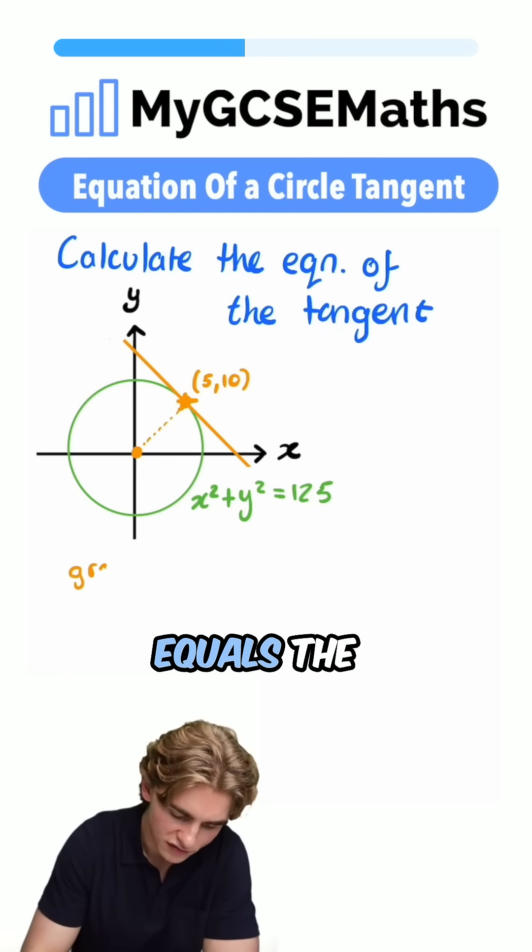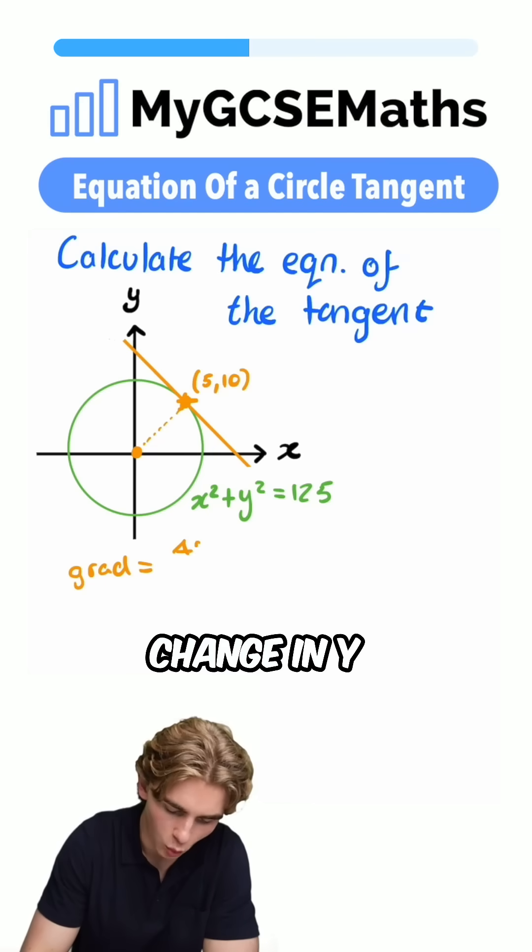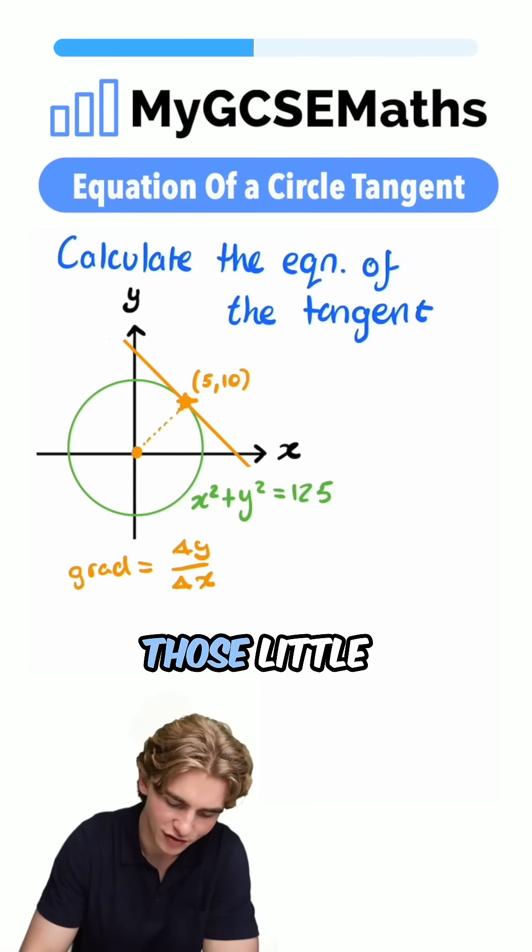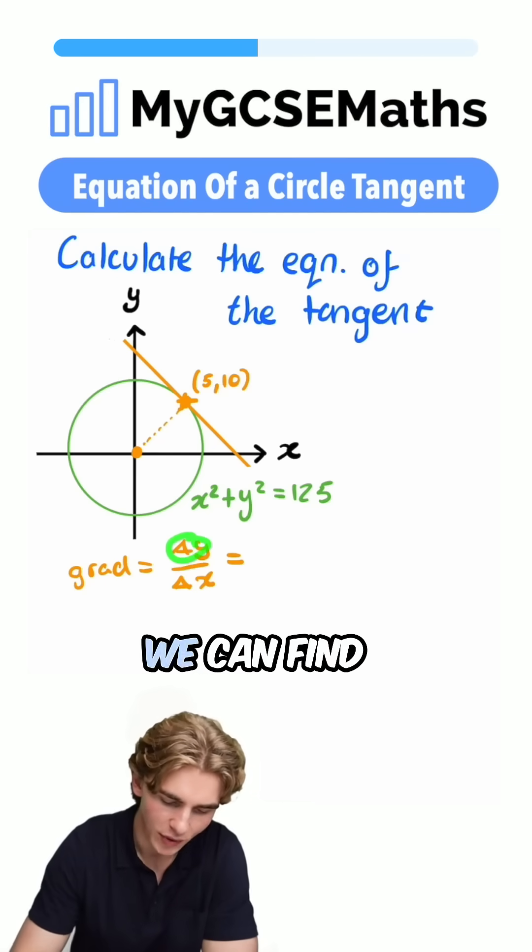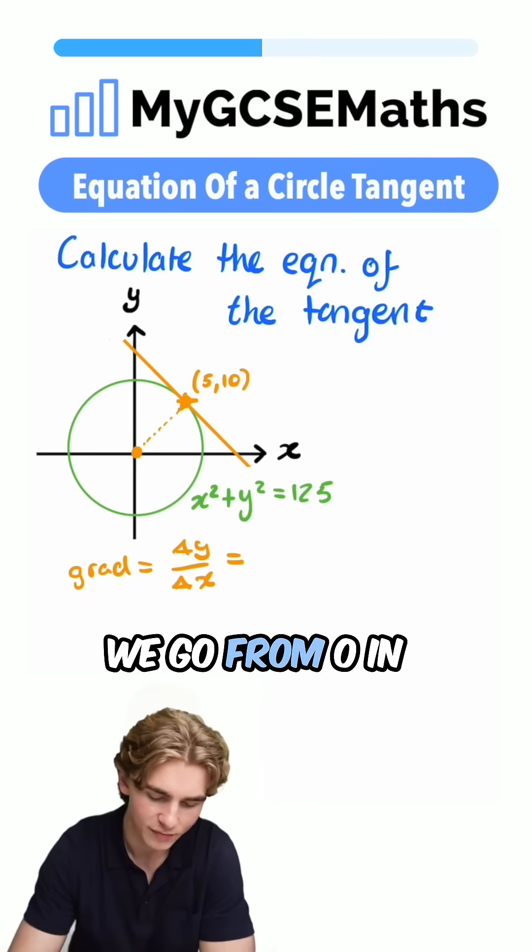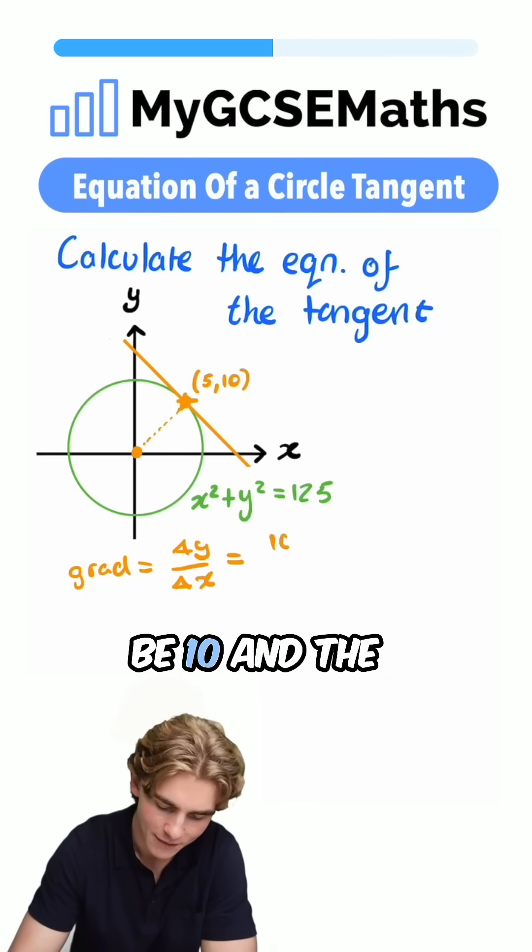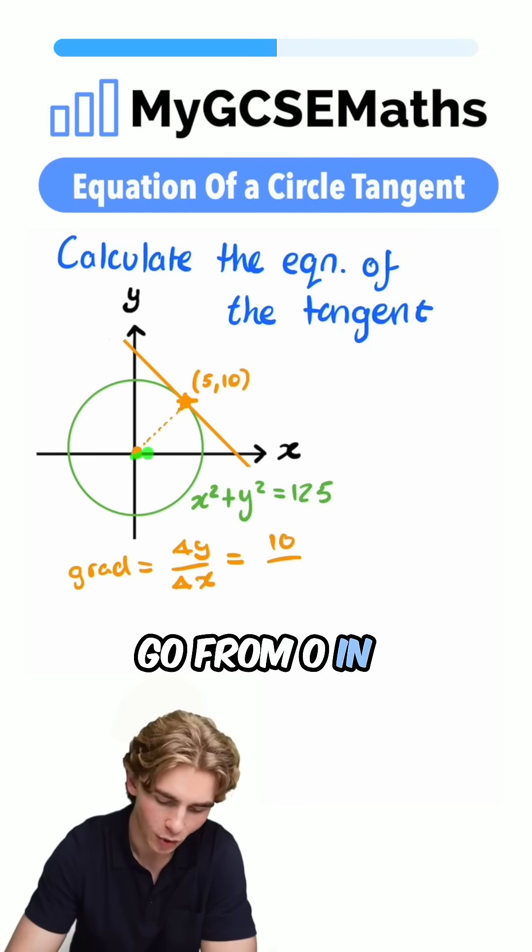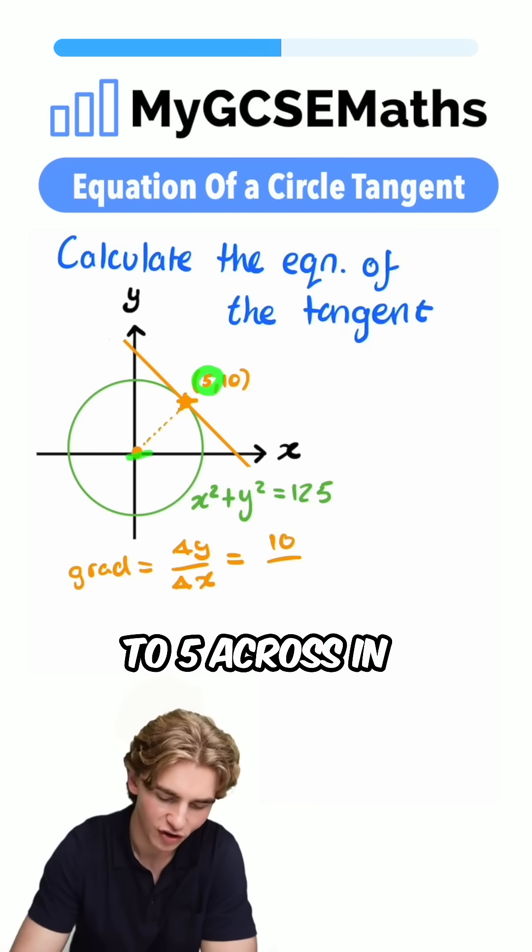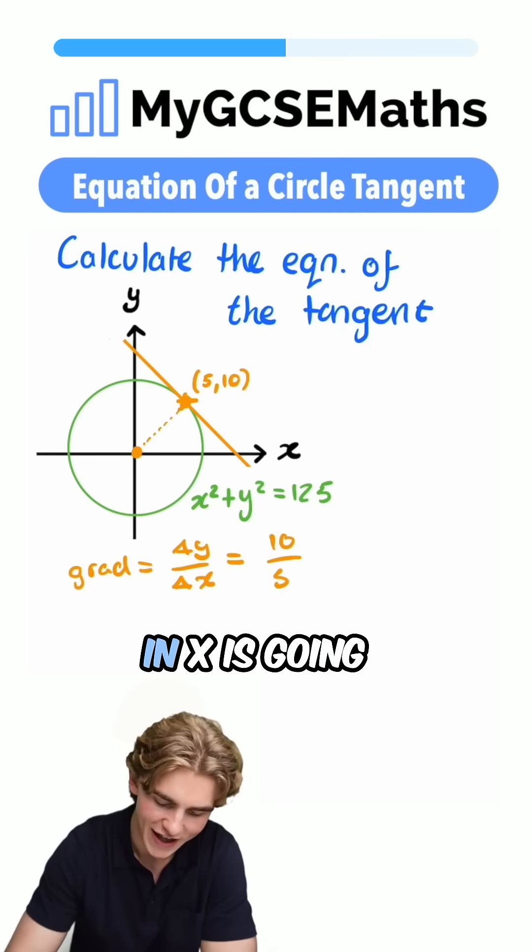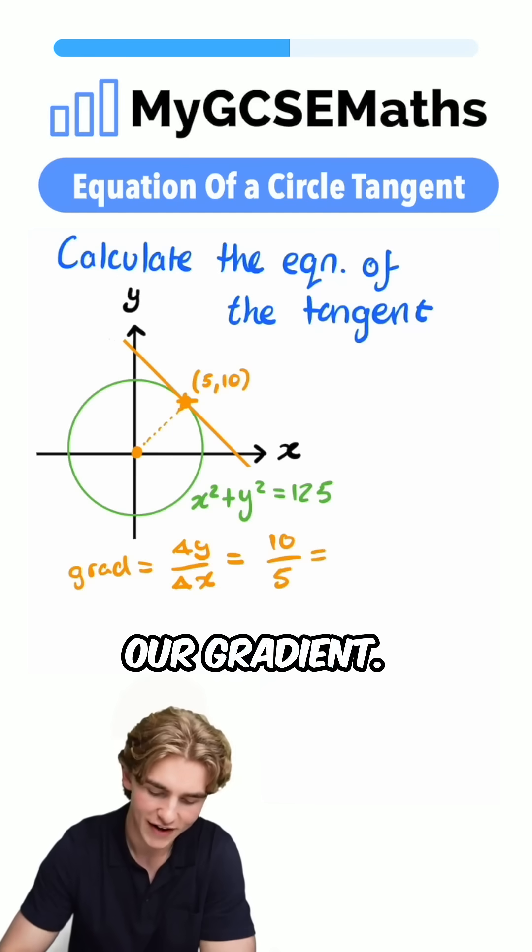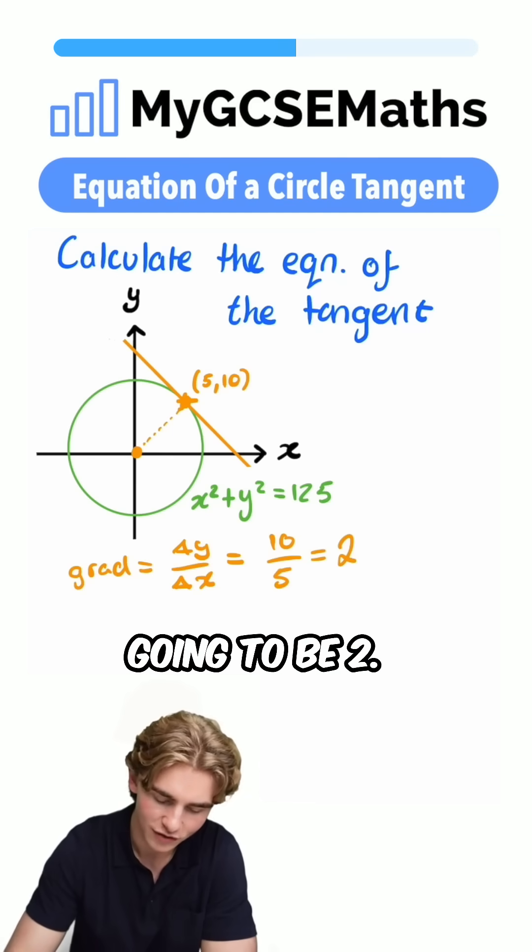The gradient equals the change in y divided by the change in x. Those little triangles just mean change. We can find the change in y: we go from 0 in the y direction to 10 in the y direction, so the change in y is going to be 10. And the change in x, we go from 0 in the x direction to 5 across in the x direction, so our change in x is going to be 5. So we can find our gradient: 10 over 5, 10 divided by 5 is going to be 2.